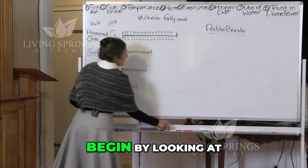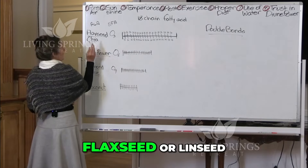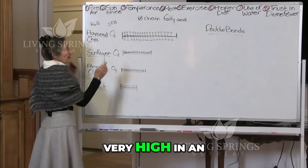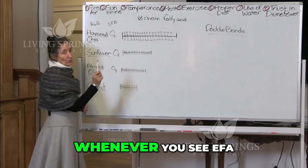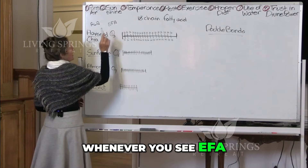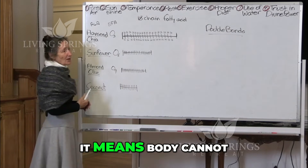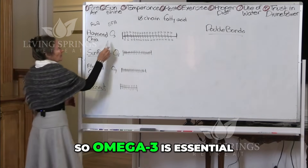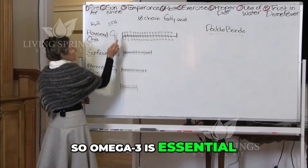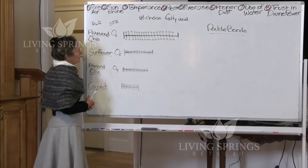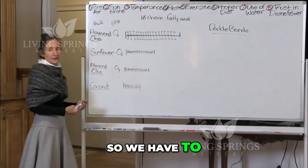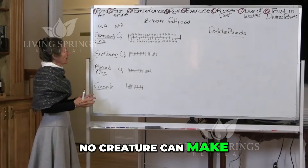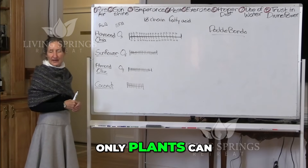We're going to begin by looking at flaxseed or linseed. Flaxseed or linseed are very high in an essential fatty acid. Whenever you see EFA — essential fatty acid — it means the body cannot make it; you've got to put it in. So omega-3 is an essential fatty acid. We don't make it, so we have to put it into our body. In fact, no creature can make omega-3 — only plants can.